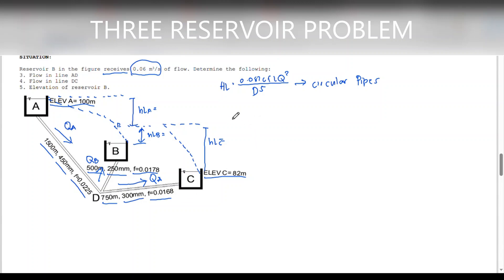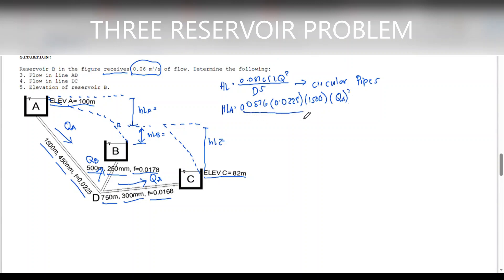We will now determine the head loss in each reservoir. Head loss at A is equal to 0.0826 × F (0.0225) × L (1500) × QA² over D (0.45) raised to 5. This will actually be equal to 151.074 QA².